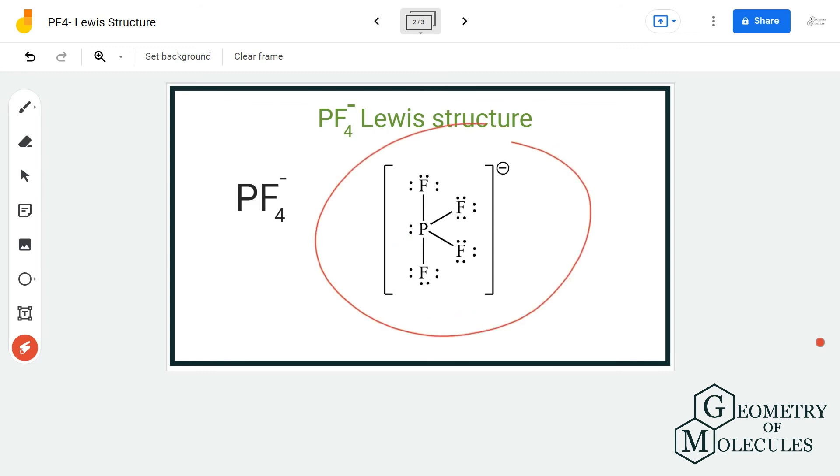As this is an ion, do not forget about putting brackets and mentioning its charge. It is compulsory when you are doing a Lewis structure for an ion. So this is a Lewis structure for PF4 minus ion.